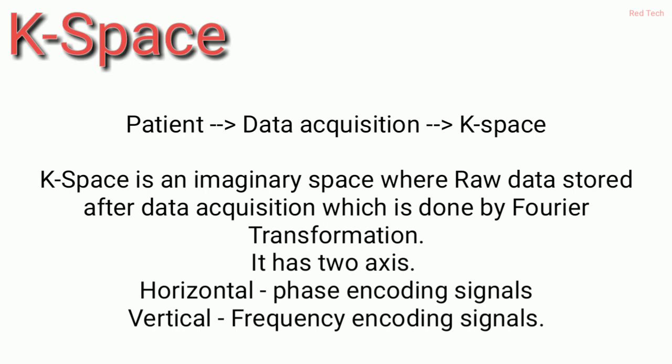The horizontal axis is for phase encoding signals and the vertical axis is for frequency encoding signals. The whole process works in steps: first we send the signal to the patient, then we collect the data — that's why we call it data acquisition.